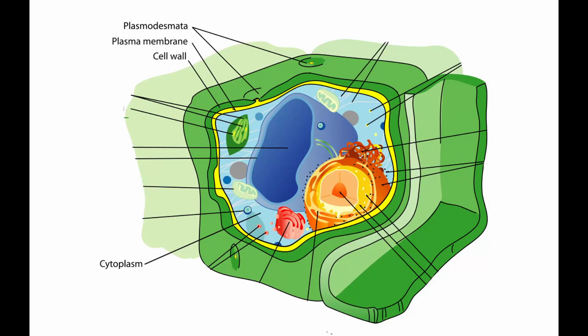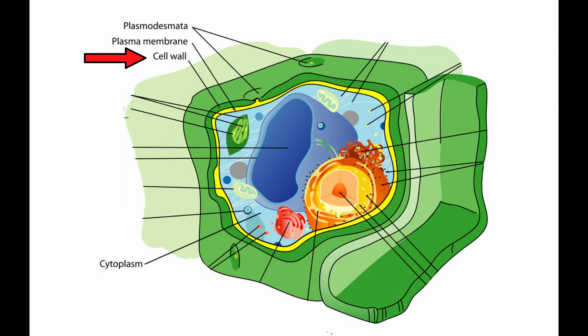To review, your basic cell has a few parts. Surrounding everything is a cell membrane, which keeps the inner contents together. Inside, you have organelles that have specialized functions, and the organelles are in this fluid called the cytoplasm. In plant cells, there's an additional major feature, which is the cell wall, and that surrounds the cell membrane.